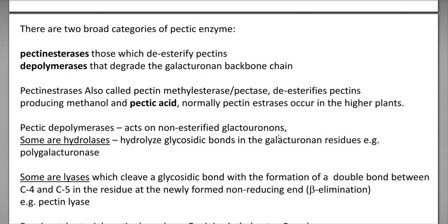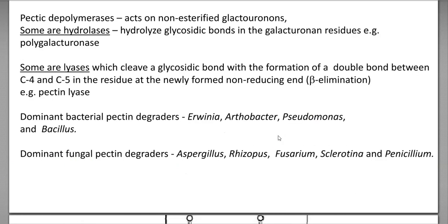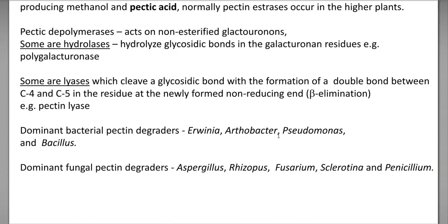Pectic depolymerases act on non-esterified galacturonan-type pectins. Pectic depolymerases are of two types: one is of a hydrolysis type and the other is of a lyase type. The dominant group of organisms involved in pectin degradation includes Erwinia, Arthrobacter, Pseudomonas, and Bacillus.